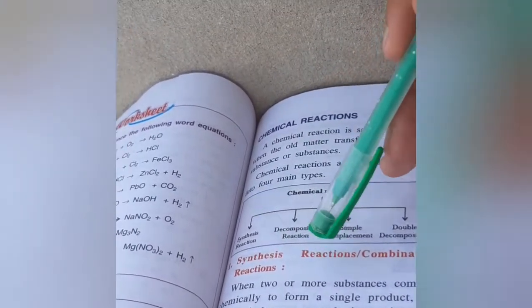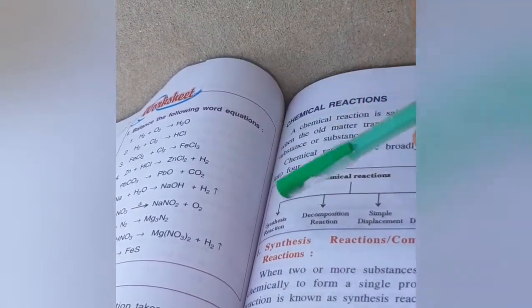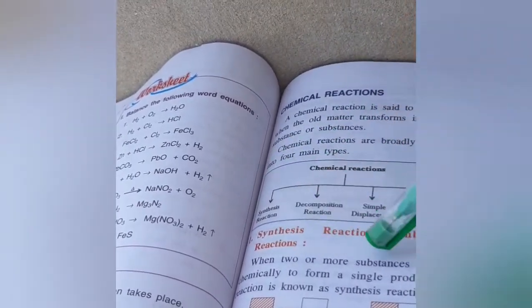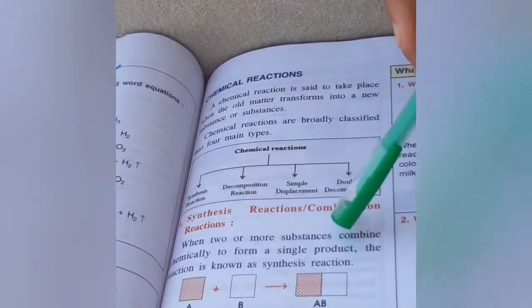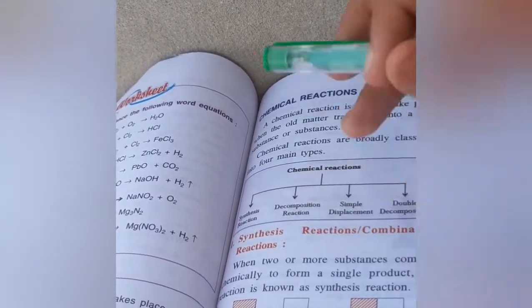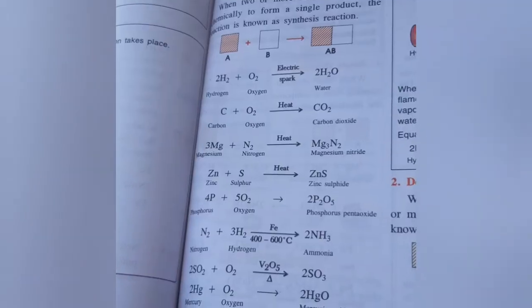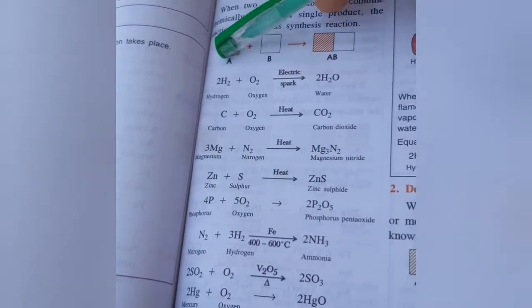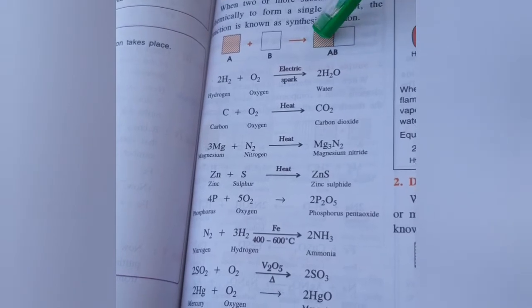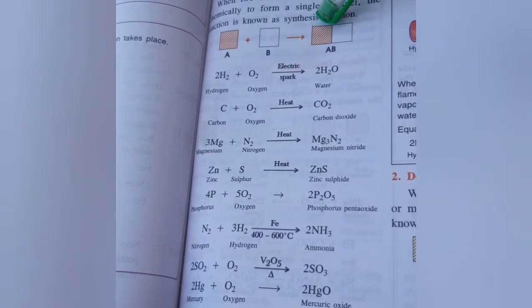Firstly, we are going to do synthesis reactions, also called combination reactions. When two or more substances combine chemically to form a single product, the reaction is known as a synthesis reaction. For example, A plus B equals AB, where both are reactants combining to form a single product.